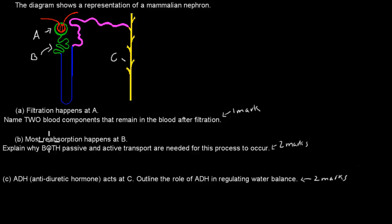B: most reabsorption happens at B. Explain why both passive and active transport are needed for this process to occur, and that's worth two marks.